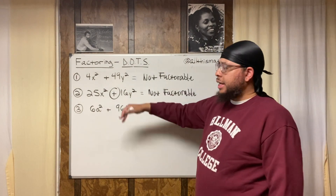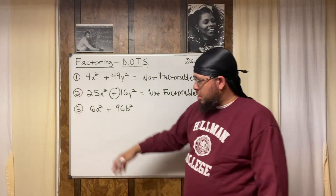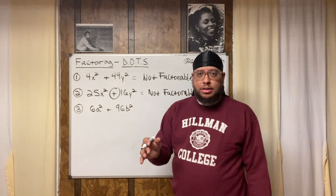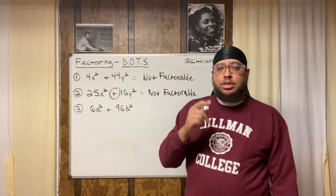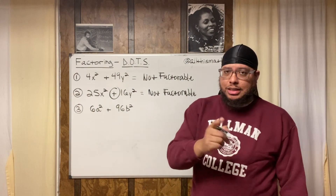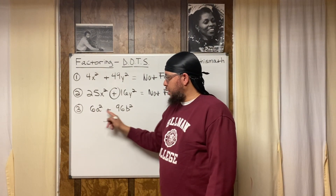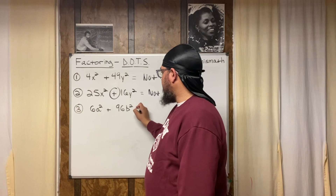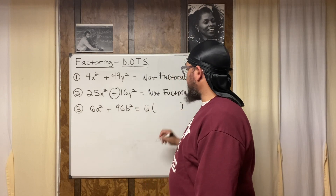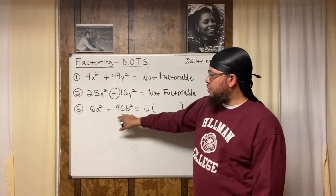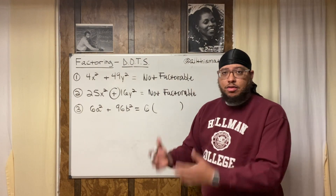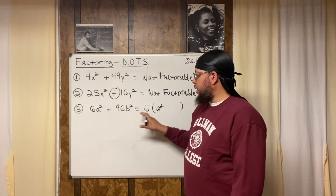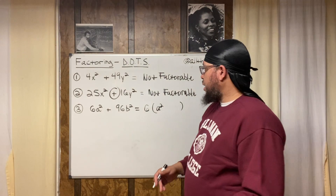Number three — like I said, always try to find a GCF. Six and 96 have a common factor. If you know that 16 times 6 is 96, then you know the greatest common factor is 6. The a and the b are not common because a is in one term and b is in the other. So pull that 6 out, write the parentheses, divide each term by 6: 6a-squared divided by 6 is a-squared, and 96b-squared divided by 6 is 16b-squared.